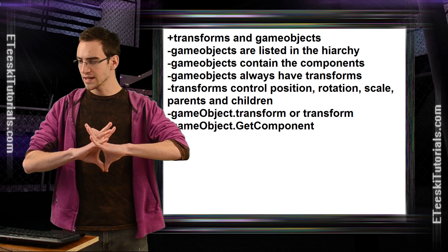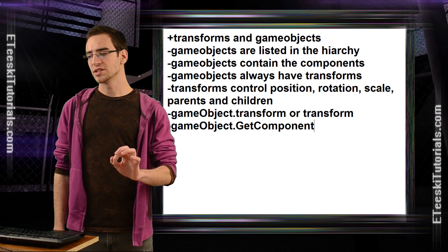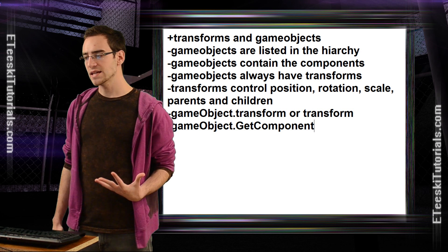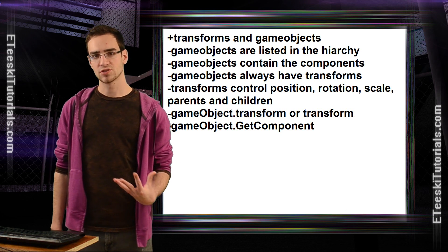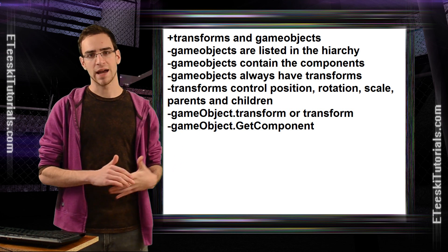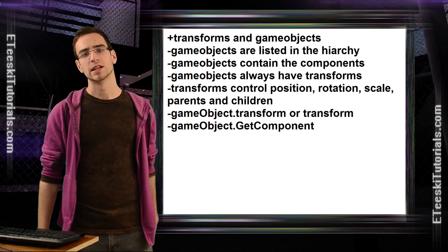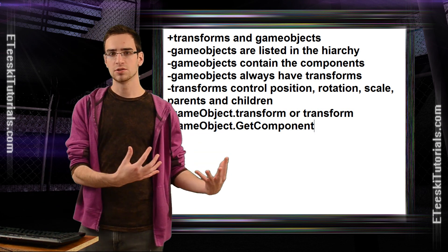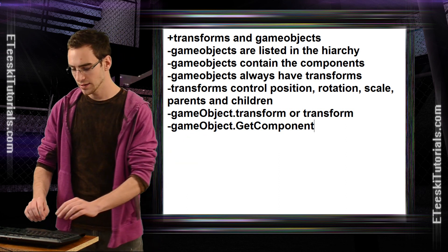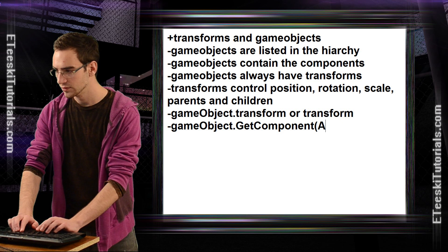You can access a transform in a script by either just writing transform or gameObject.transform, and you can also access any component that is attached to your game object. For example, if you want to access the audio source, you would write gameObject.GetComponent and then inside parentheses you would write AudioSource.